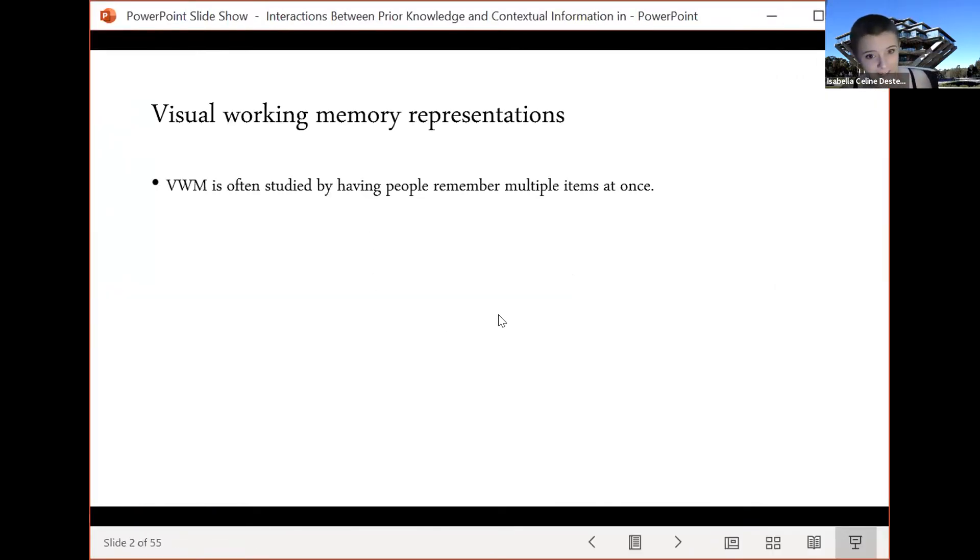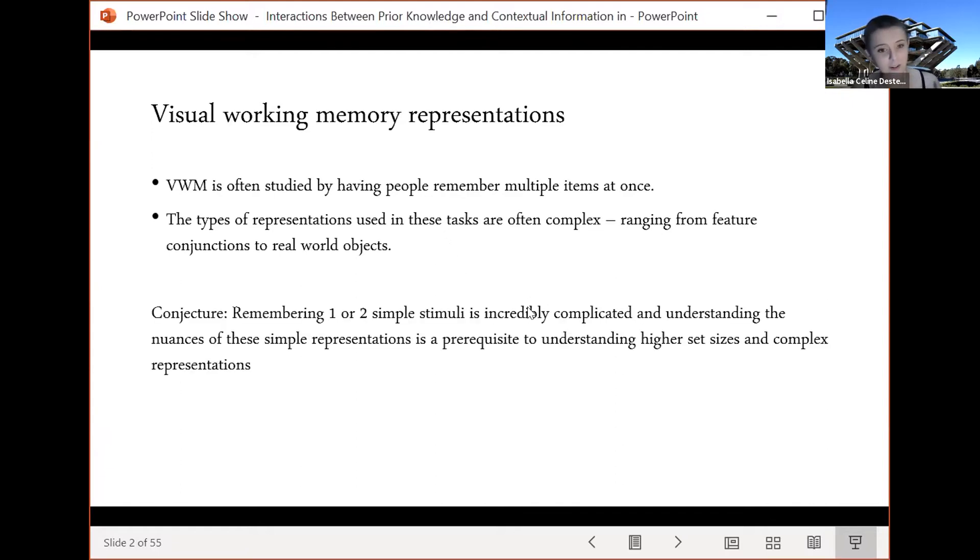So visual working memory is often studied by having people remember multiple items at once and it's common to use complex stimuli for these tasks. Using these kinds of paradigms might not be entirely useful if we don't understand the nature of visual working memory representations. In this talk I hope to convince you that the most boring version of visual working memory tasks, remembering a single item or a pair of items, is actually incredibly complicated and understanding the nuances of these simple representations is a prerequisite for understanding higher set sizes and complex visual working memory tasks.